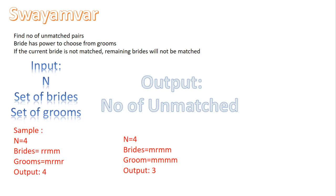The question is pretty simple. There will be a set of girls and a set of boys — we call them brides and grooms as they are to be married soon. As a coder, your duty is to find a pair from the brides and the grooms if their preferences match. The preferences are represented with R and M. The question asks you to print the number of unmatched pairs from the set of brides and grooms.